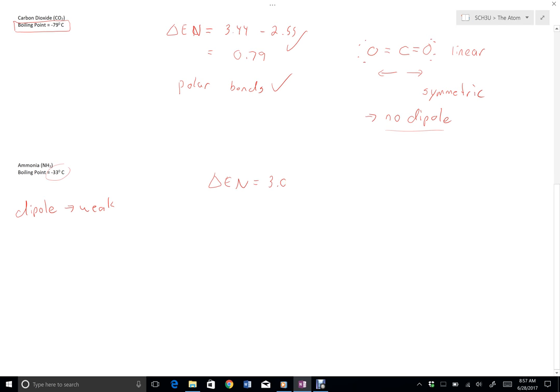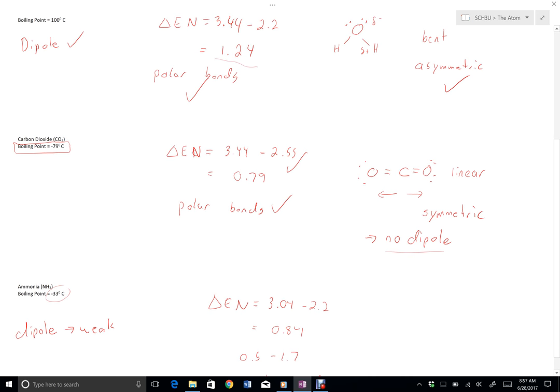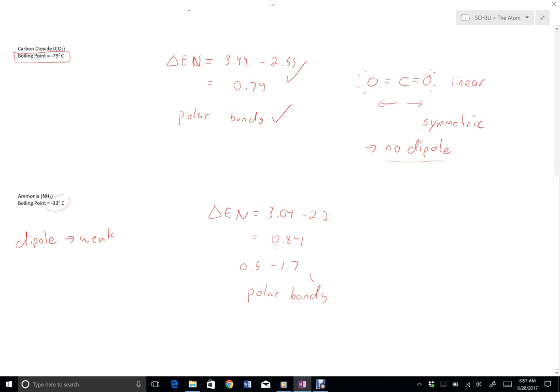Nitrogen is 3.04, hydrogen is 2.2, so our electronegativity difference here is 0.84, which is between 0.5 and 1.7, so we have some polar bonds here. Not as polar as water was, but still, we meet the requirement.